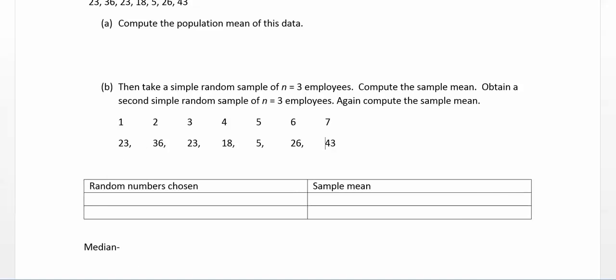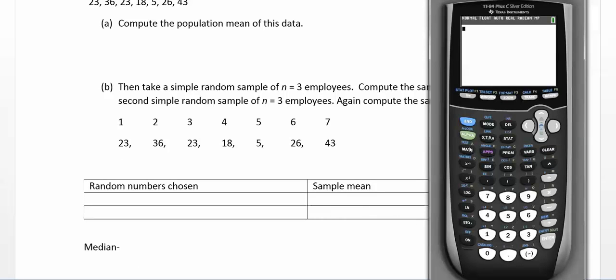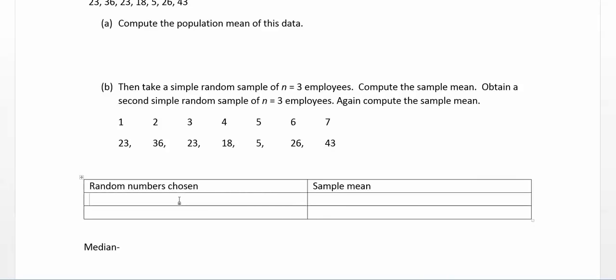I'm going to go to my calculator. And I'm going to go to math. And I want to scroll over to probability. And I'm looking for random integer. So that's number 5. And it's going to ask for an upper and a lower. Well, the lowest number I want is 1. The highest number is 7. And I want 3 numbers total. That's what all that means. So I'm just going to have it do this twice. So it said 6, 7, and 2. So 6, 7, and 2 would be 26, 43 and 36 would be the winners.